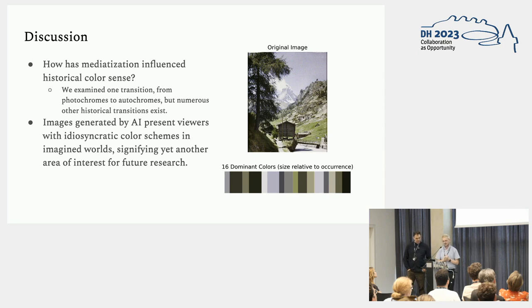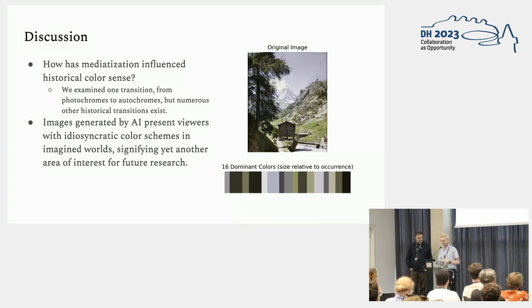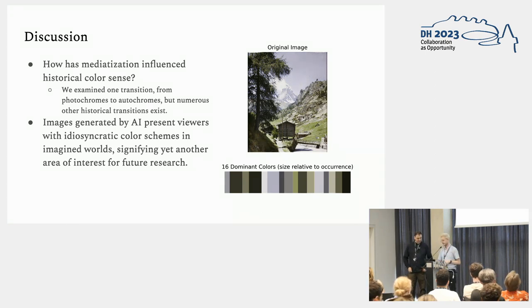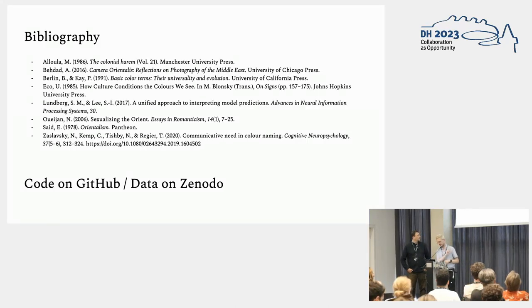We looked into the role that mediatization played in this historical color sense. Of course, we've only looked at one transition — going from photochromes to autochromes — but numerous other historical transitions exist, and this is something we want to explore in future work. One other thing this made us think about is that we now have a lot of images generated by AI models, which also present users with worlds that use very idiosyncratic color schemes of imagined worlds. We were wondering what this would do with people's perception of the world if the colors presented are not there in the real world. There's code on GitHub and data on Zenodo, and we are very happy to take questions.